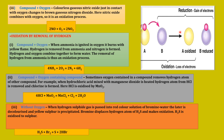Now let us move to the diagram again. Same as before — A and B are two elements. Reduction means gain of electrons; B is reduced. Oxidation means loss of electrons; A is oxidized. I hope you have understood all the oxidation examples, definitions, and the basic idea of oxidation and reduction shown by the diagram. If you have any doubt, please jot it down and ask me in my Zoom class. Thank you students and have a nice day.